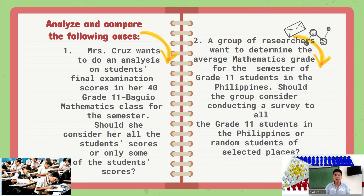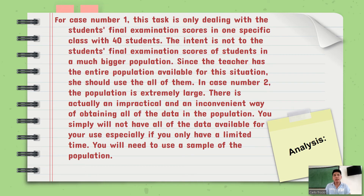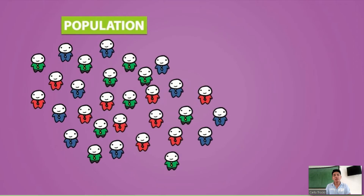In the second scenario, a group of researchers want to determine the average mathematics grade for the semester of Grade 11 students in the Philippines. A researcher cannot survey all Grade 11 students in the Philippines. That is when sampling methods came in. We need to be careful in choosing which sampling method to use because it depends on the nature of the data and the nature of the population — that is what we call population versus sample.